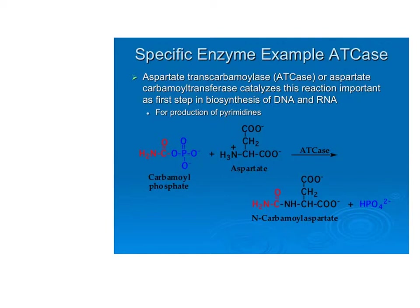Carbamoyl phosphate is also important in the urea cycle. Aspartate is not only an amino acid used to make proteins, but it's a very important metabolic intermediate in multiple pathways. You're going to see how it's linked to multiple pathways next semester.